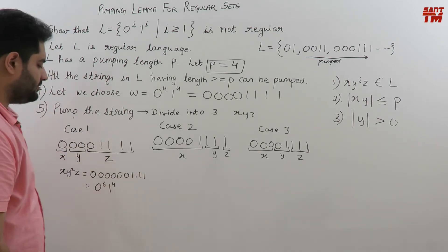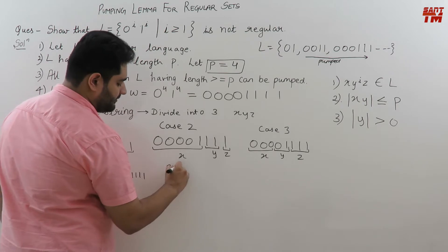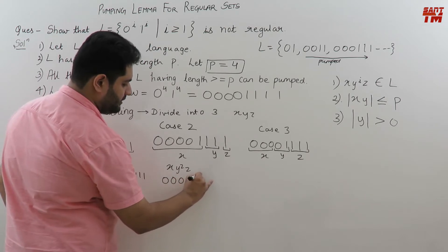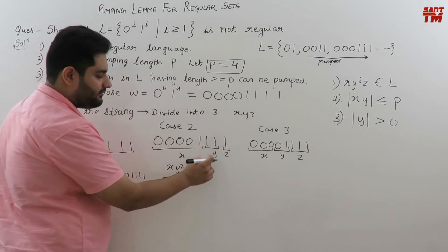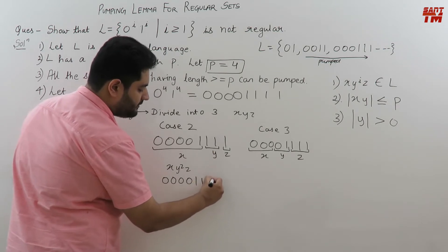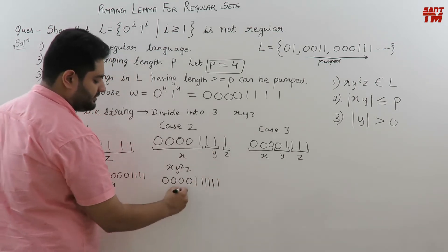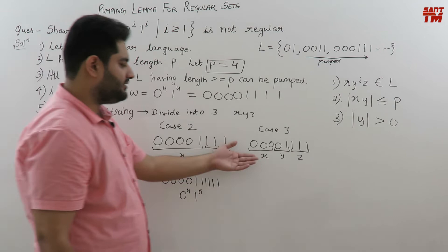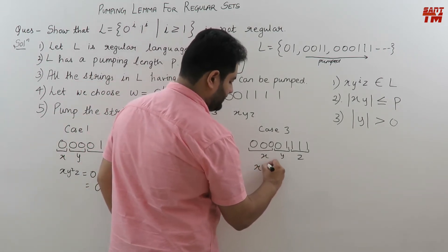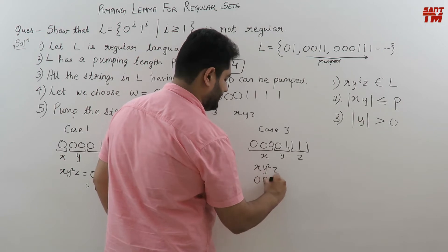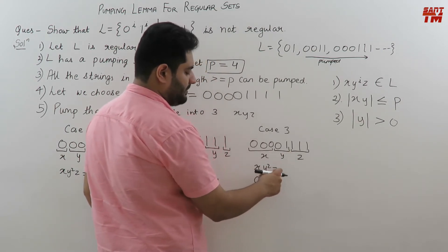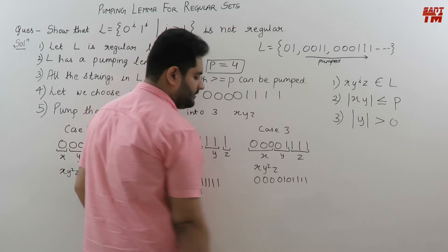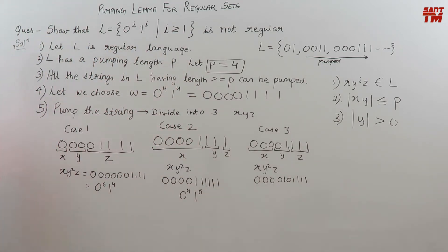In case 2, if I pump this string to X, Y squared, Z: X will be 0, 0, 0, 0, 1 — four zeros and one one. Y has 2 ones, so Y squared gives 4 ones, and Z is 1, 1. So this becomes 0 raised to the power 4, 1 raised to the power 6. Now consider case 3: X is 3 zeros, Y is 0, 1 — so Y squared becomes 0, 1, 0, 1 — and Z is 3 ones. This is the string on pumping case 3.